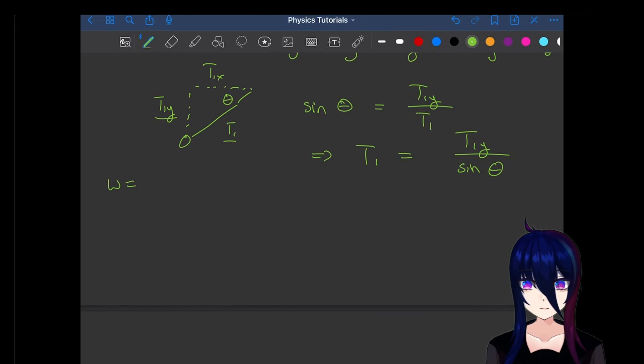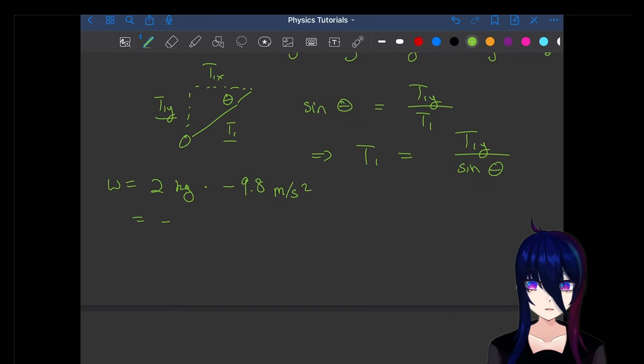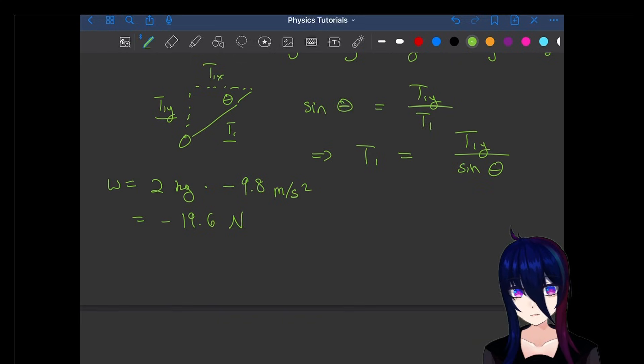First, let's go ahead and plug in what we know for our mass. The ball is two kilograms. Gravity is of course negative 9.8 meters per second squared. Gives us the weight is negative 19.6 Newtons. Awesome.